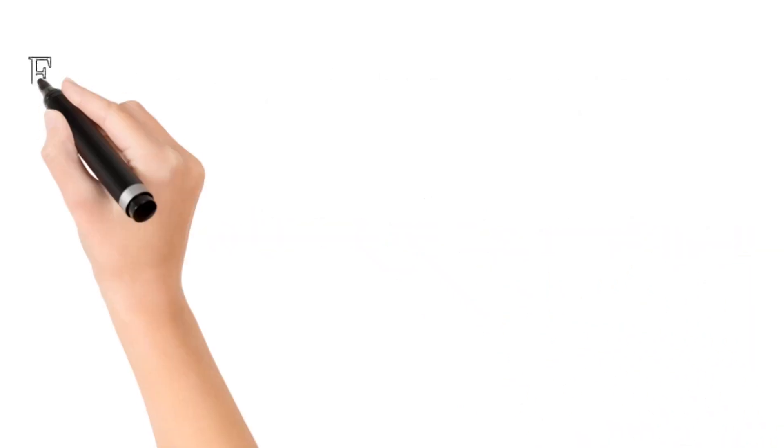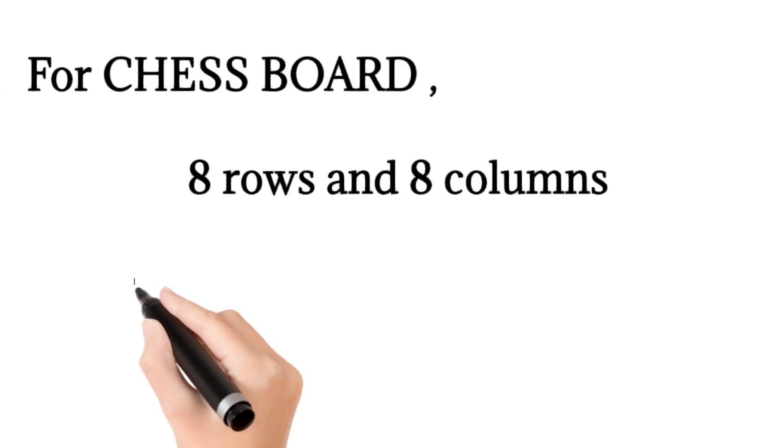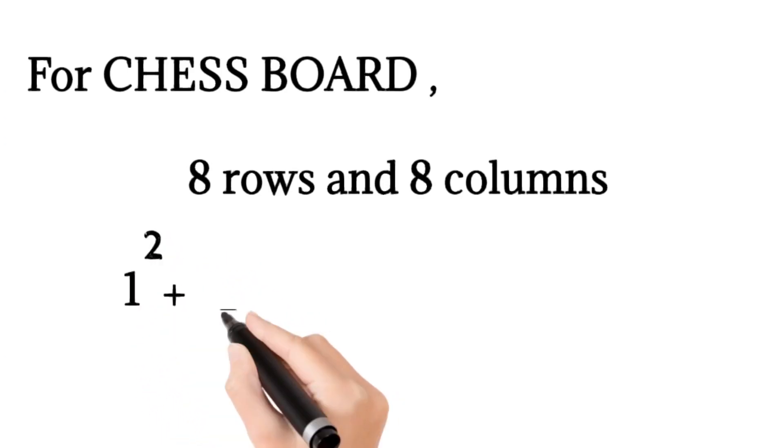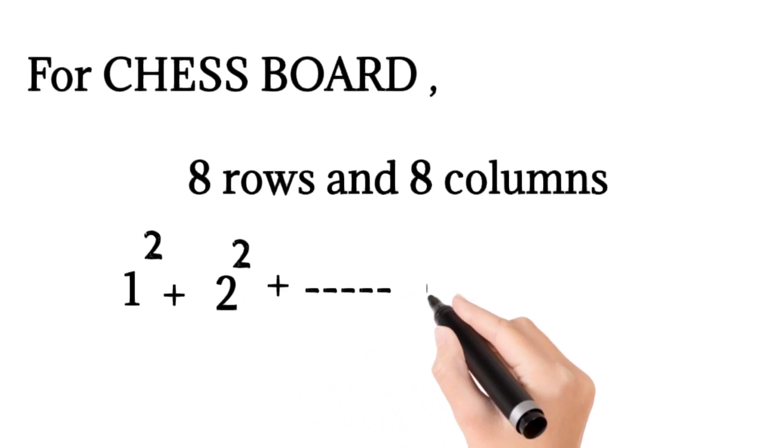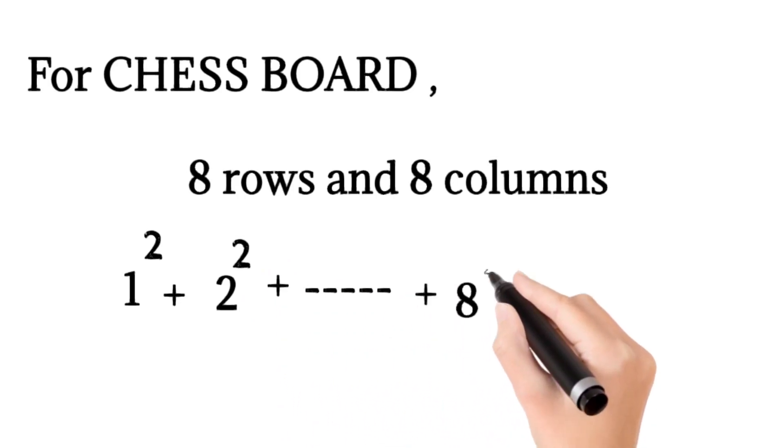So for a chessboard, we have 8 rows and 8 columns. The formula we used is 1 squared plus 2 squared plus 3 squared and so on up to 8 squared.